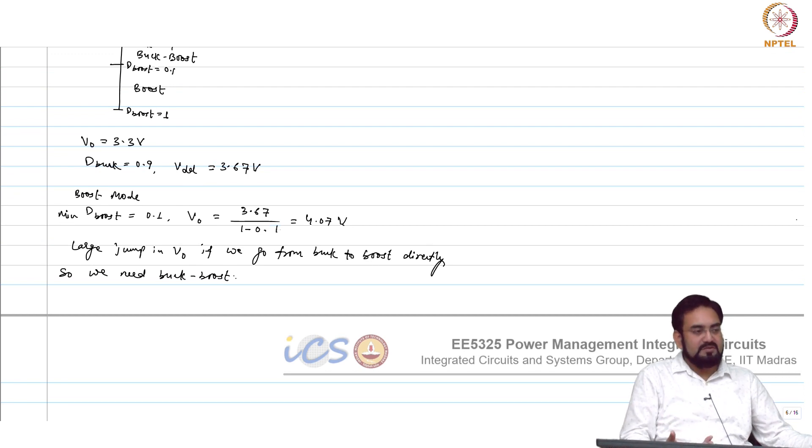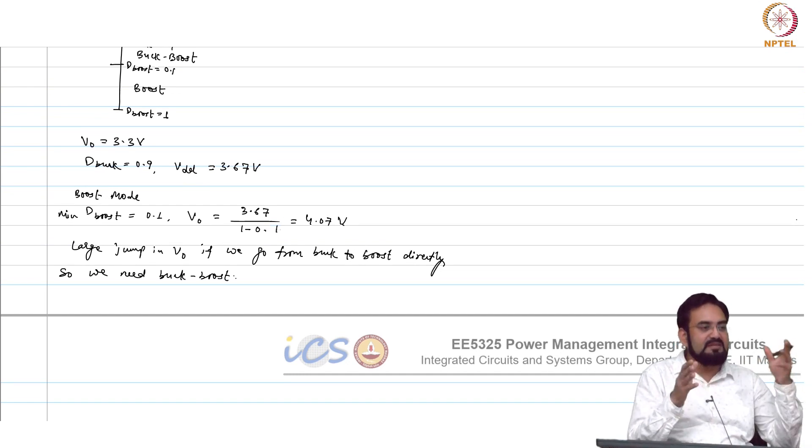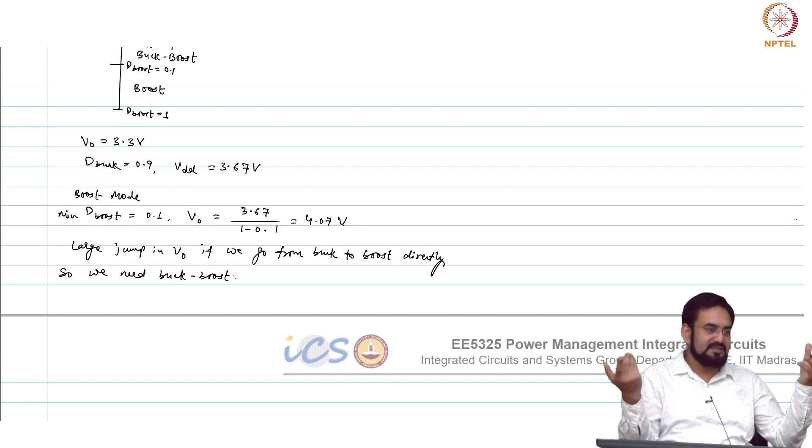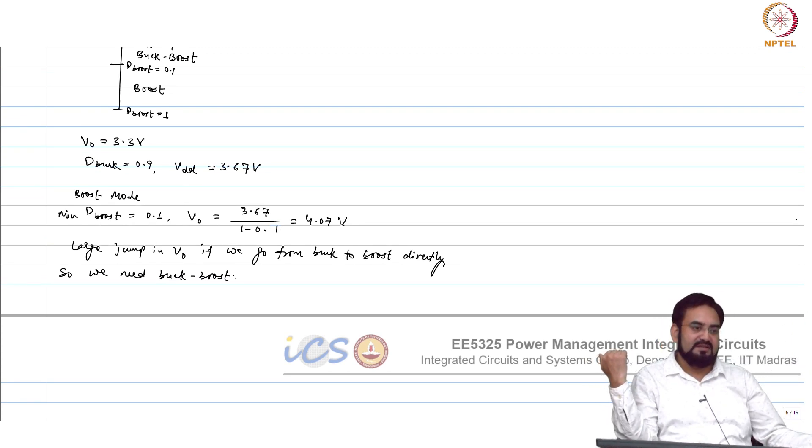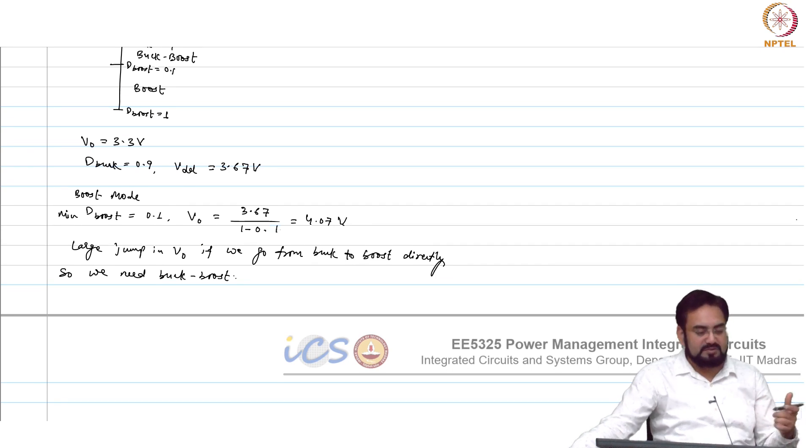This is the main reason to have a buck boost mode in between, because the buck boost region is basically more like a dead zone for buck and boost. You cannot regulate the output in between that region, because of the limited or max or min duty cycle, because your duty cycles are saturated. One is saturated on higher side, other is on the lower side. Buck and boost cannot do anything. So, you have to operate in buck boost.